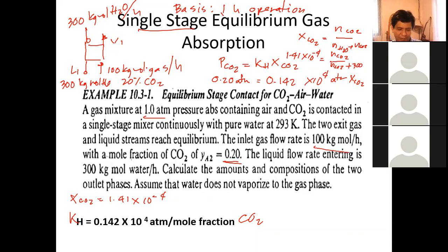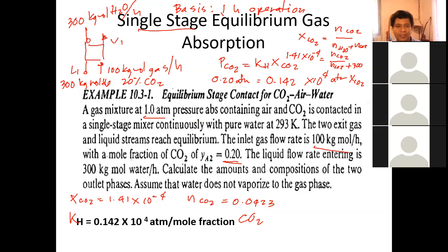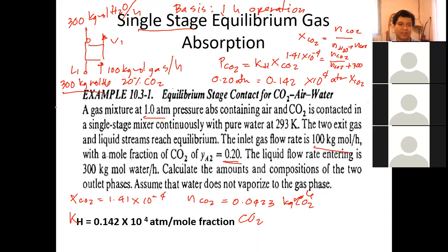Solving the equation gives N CO2 ≈ 0.0423 kilogram-mole. So only 0.0423 kilogram-mole of CO2 is transferred to the liquid water out of the original 20 kilogram-mole of CO2 in the gas stream. This is a negligible amount. Therefore, the flow rate of L1 is approximately 300.0423 ≈ 300 kilogram-mole per hour.